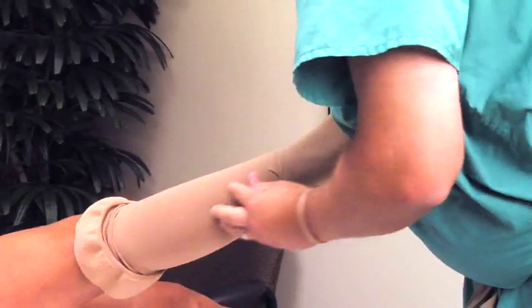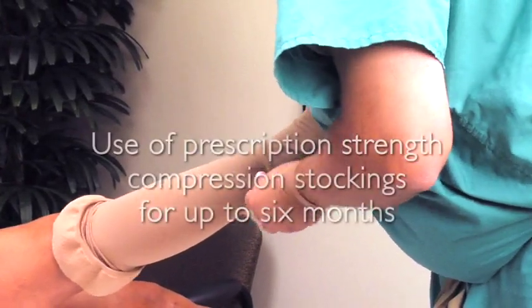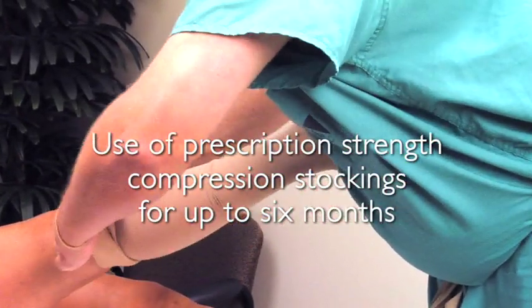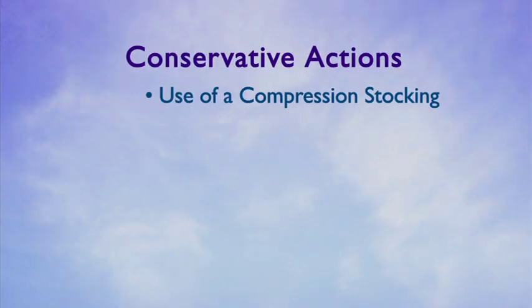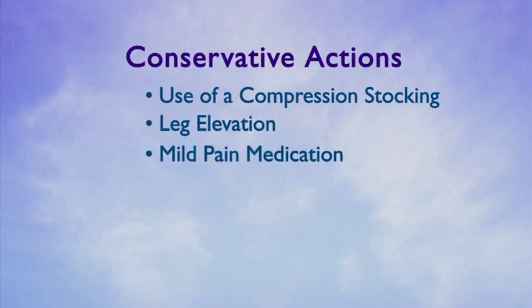Often, insurance companies require the use of conservative measures before they will authorize treatment. Conservative measures may include the use of prescription strength compression stockings for up to six months, leg elevation, and the use of mild pain medication. Once these requirements have been met, we will request insurance authorization for the treatment plan.